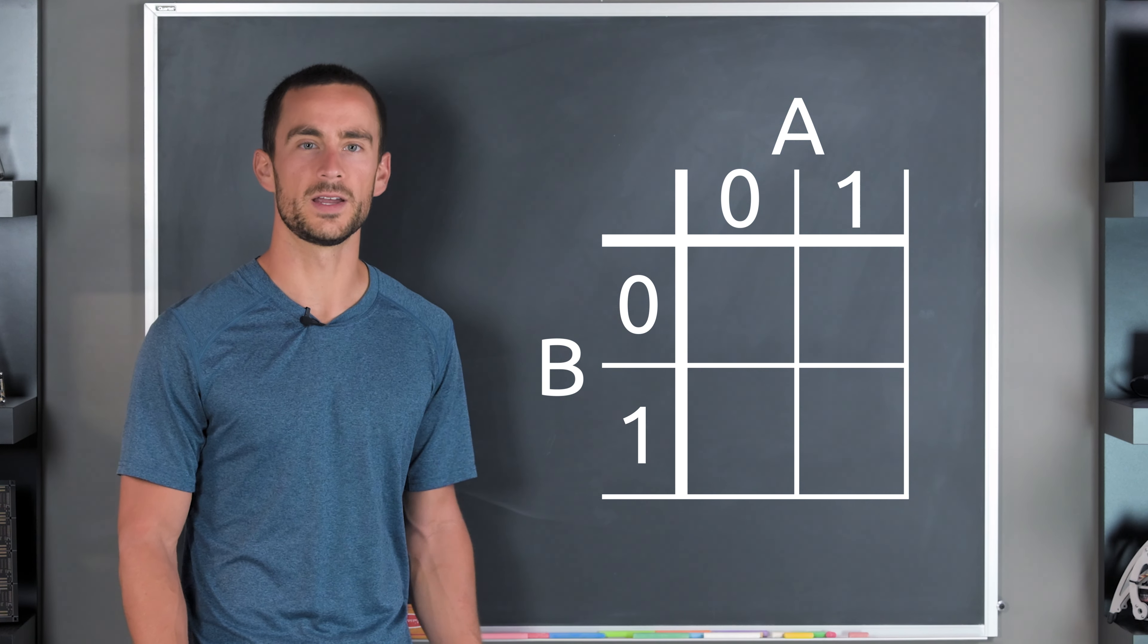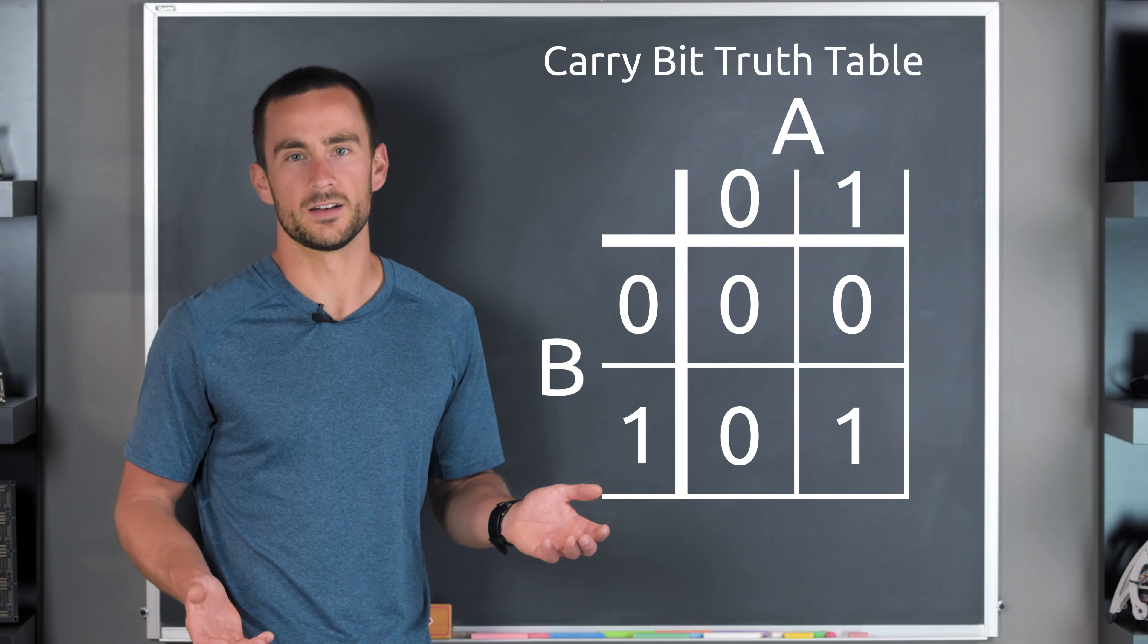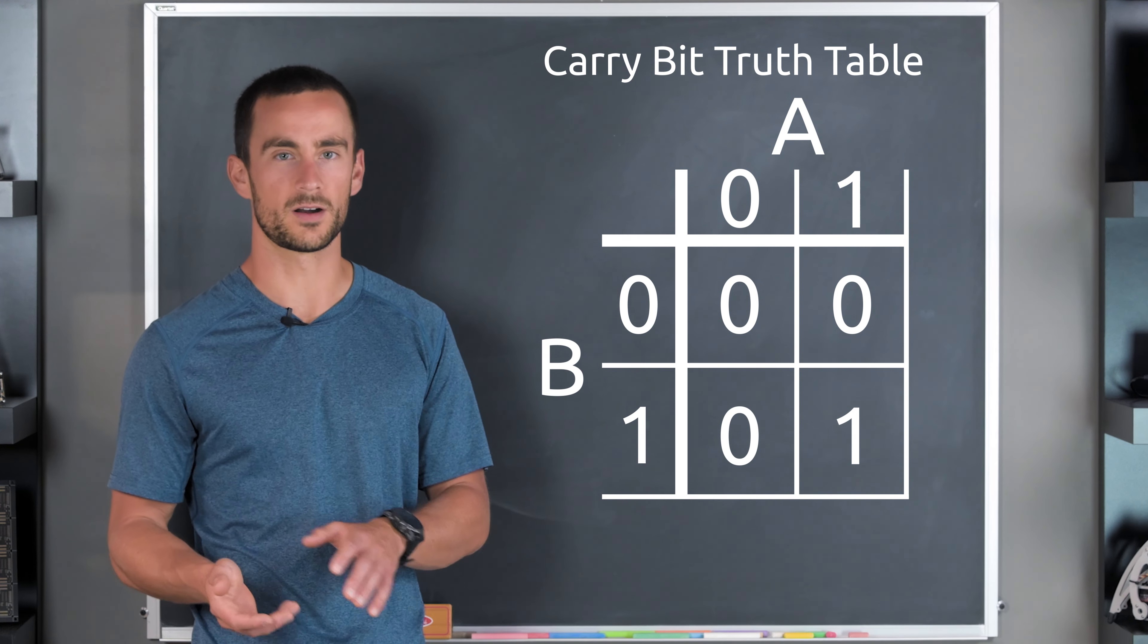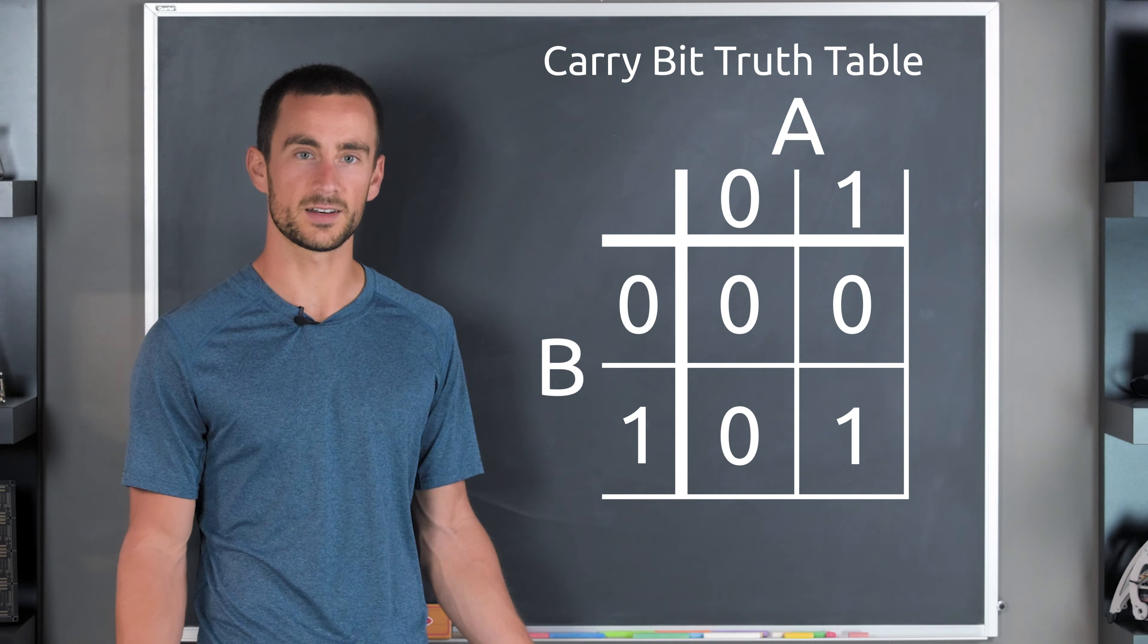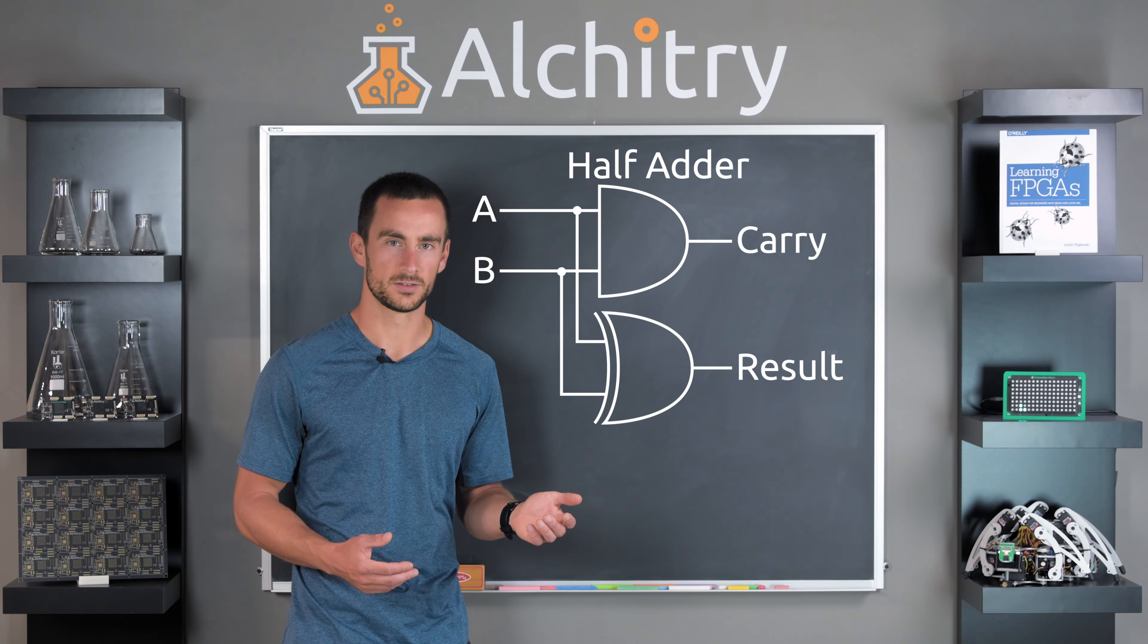But we're not done yet. We also need a way to signal that this column has overflowed. Well, that's easy enough, since it will only overflow when the first input and the second input are 1, so we can simply use an AND gate. Putting these two gates together, we can make what is called a half adder. So why is it called half? That's because this circuit can't accept a previous column's overflow bit.